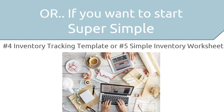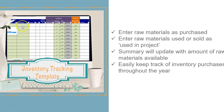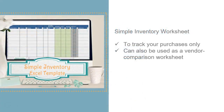If all of that sounds super complicated and you want to start really simple, there is option number four: the Inventory Tracking Template. It consists of two pages. On the first page, you enter the raw material name or description — you can also use this for finished items. You select from a dropdown whether the item was purchased or used up in a project. If purchased, you enter the quantity in the package and the price paid, and it calculates your price per unit. If the item is being used in a project, you enter how much was used.